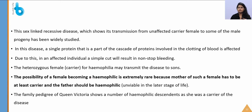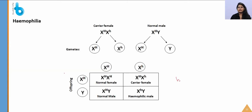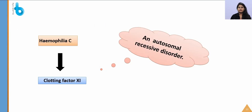From pedigree analysis, hemophilia shows a criss-cross pattern of inheritance. Females generally act as carriers, passing the defective gene to sons. The defective gene can also pass to daughters, who act as carriers again and pass it to sons in the same criss-cross manner.